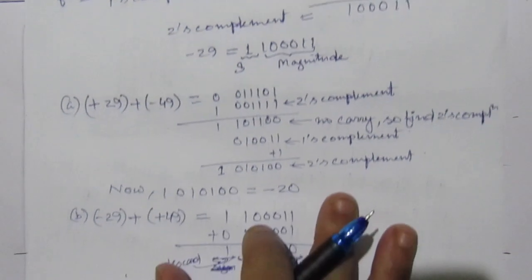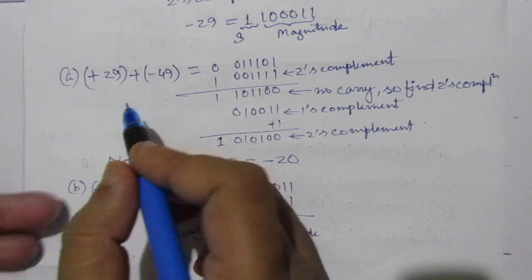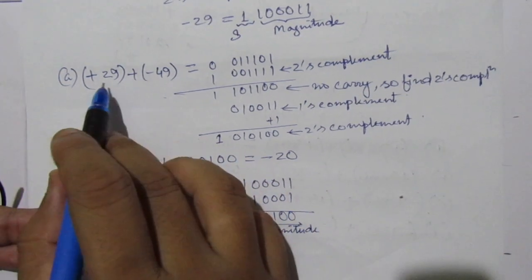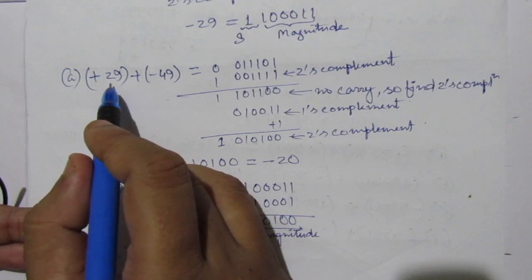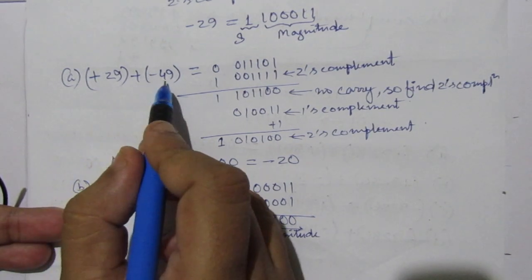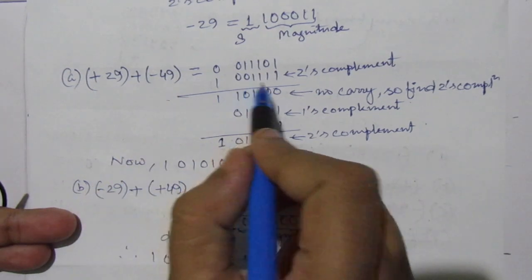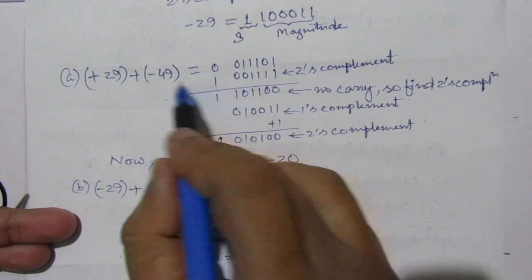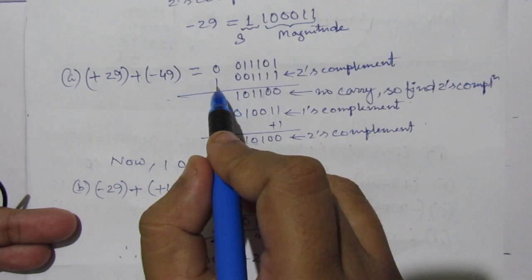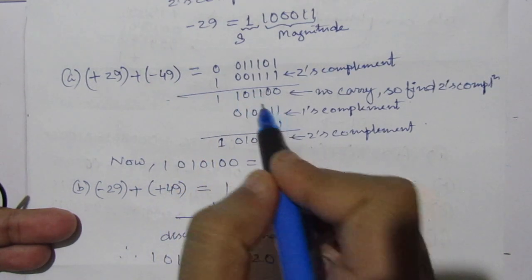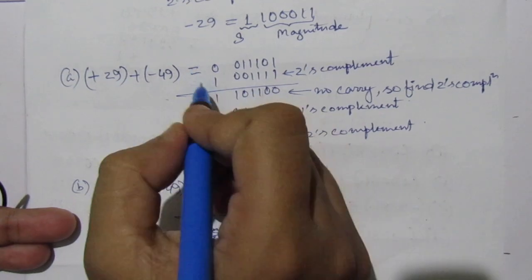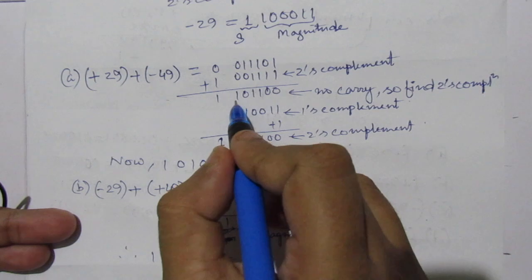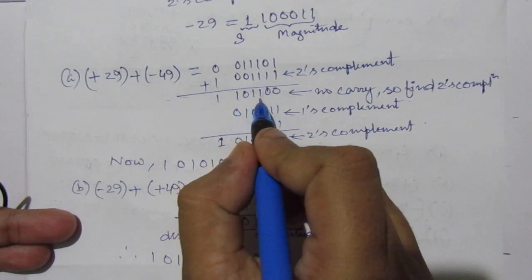Now we will perform all the operations given in the question. The first operation is +29 plus (-49). We add the binary representation of +29 with the 2's complement of 49. The 2's complement of 49 is used because it is minus. The sign bit is 1, and after addition the magnitude bits are 101100.